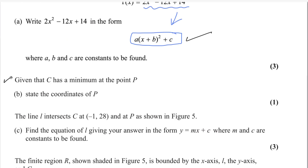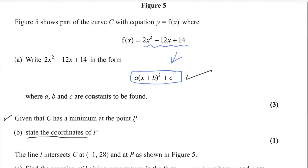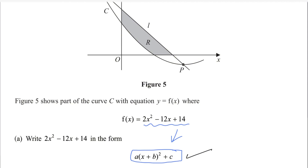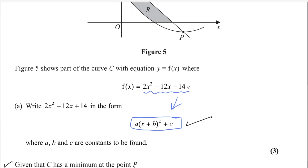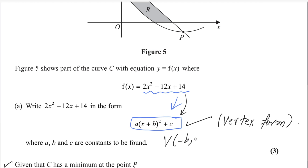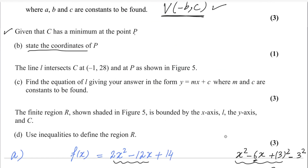For the second part: given that curve C has a minimum at point P, state the coordinates of point P. The minimum point is the vertex of this quadratic equation. In vertex form a(x + b)² + c, the coordinates of the vertex are (-b, c). Whatever sign is inside, we change it for the x-coordinate, and keep c as is.